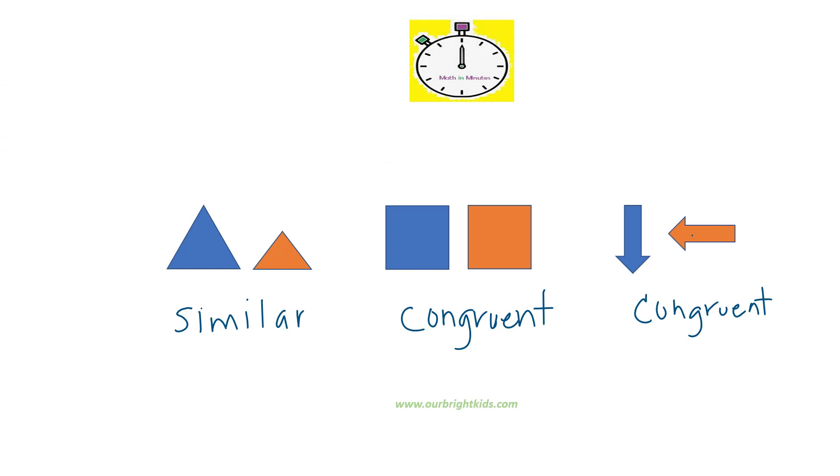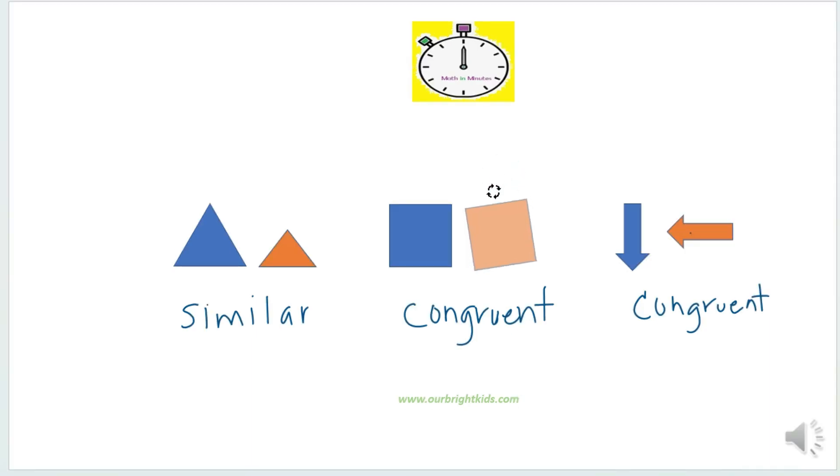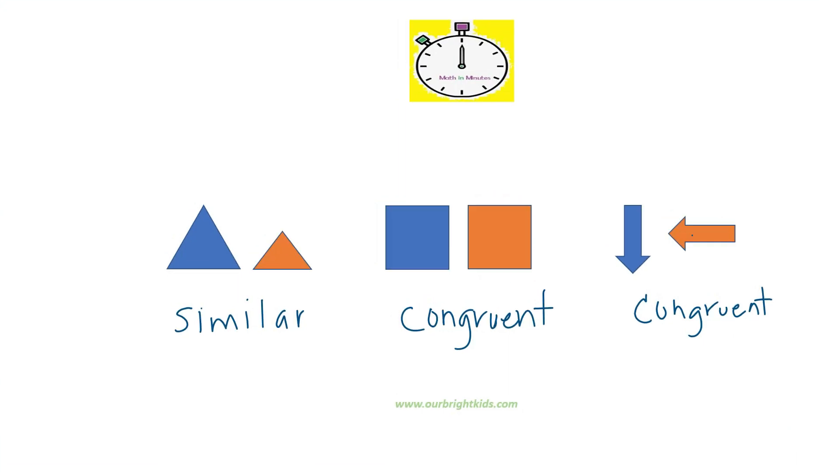So in general, similar triangles have to have the same shape but not necessarily the same size. Congruent polygons have to have both the same shape and the size, no matter the rotation or the reflection of the polygon shape.